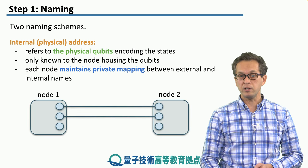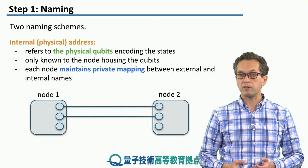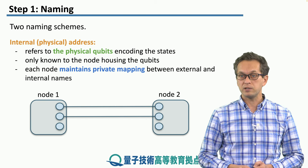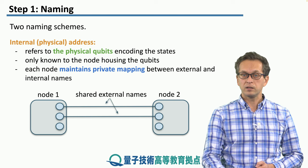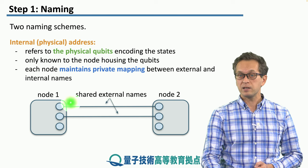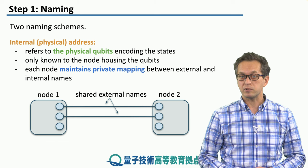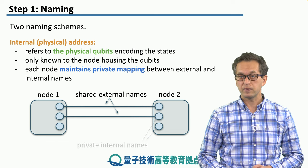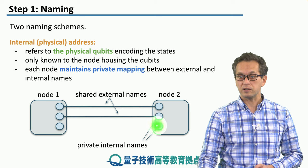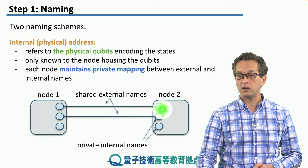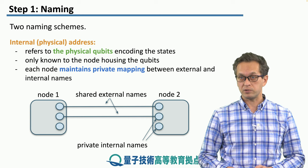For example, here we have two nodes of a network — node 1 and node 2 — each having three quantum memories, sharing two bell pairs. The links represent bell pairs, and they are what we have been calling the external names, or shared external names. While these qubits inside the QNIC held by node 2 are referred to by private internal names.